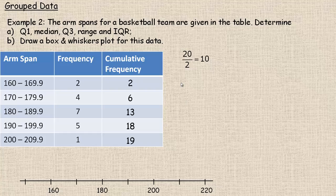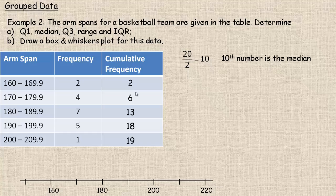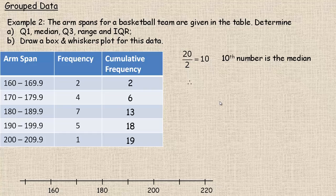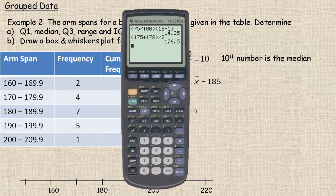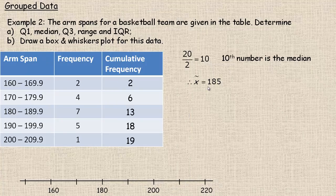To find the median: there are 19 numbers — an odd count — so adding 1 to get 20 and dividing by 2 gives the 10th number as the median. Looking at the cumulative frequencies, 10 falls between 6 and 13, so the median is in the 180s interval. Using the midpoint of that interval, the median is 185 — or more precisely 184.95, rounding to 185.